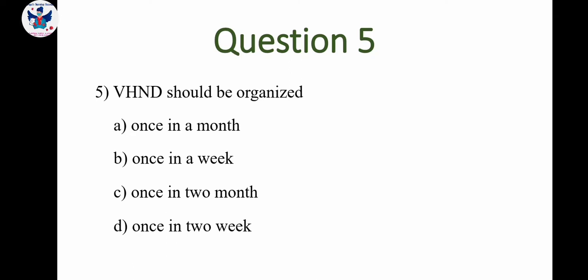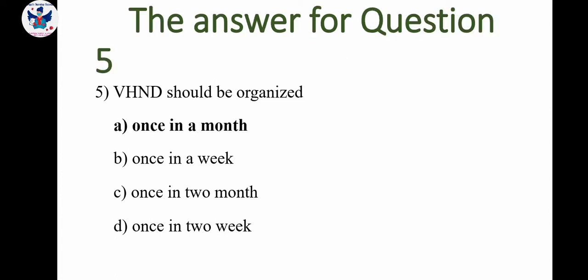Question number 5: VHND should be organized — A: once in a month, B: once in a week, C: once in two months, D: once in two weeks. The correct answer is once in a month.